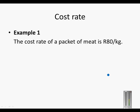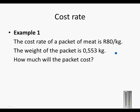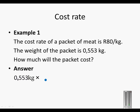Cost rate example 1: The cost rate of a packet of meat is 80 Rand per kilogram. The weight of the packet is 0.553 kilograms. The question is: how much will this specific packet cost? If I take the weight in kilograms and multiply it with 80 Rand divided by kilogram, look at what will happen to the units.